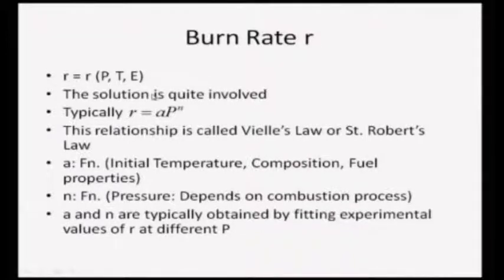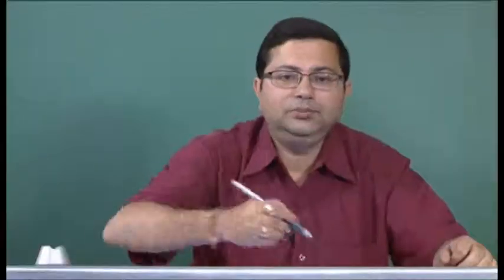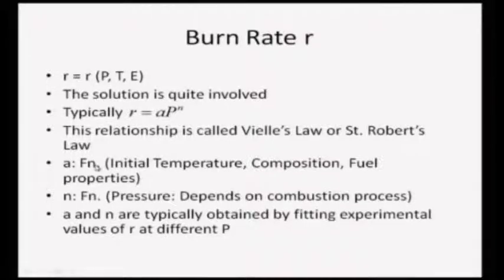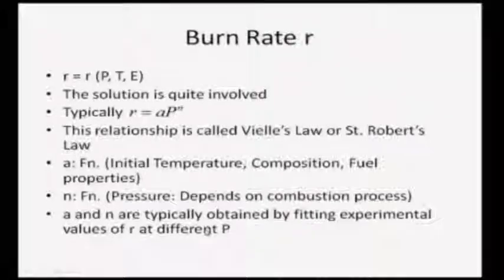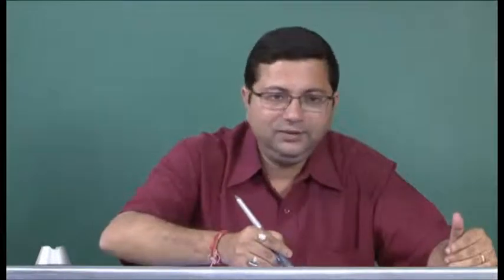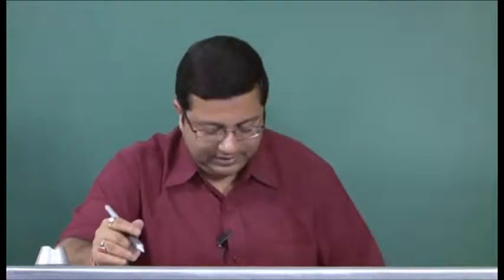The relationship r = a·p^n is called Vieille's law or St. Robert's law, which dictates the burning rate of solid propellants, typically double base propellants. Here a is a function of initial temperature, composition, and fuel properties, while n is a function of pressure and depends on the combustion process. The constants a and n are typically obtained by fitting experimental values of r at different pressures.